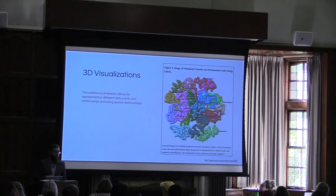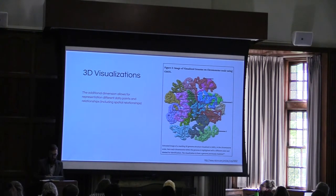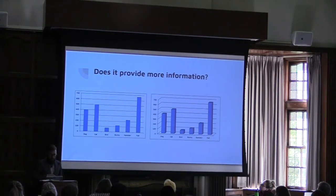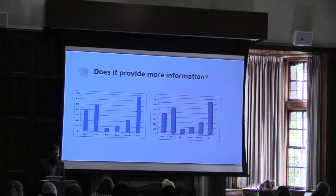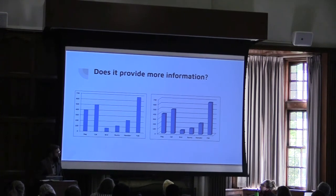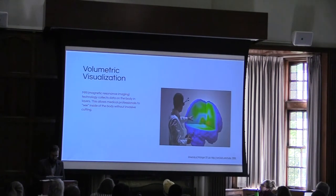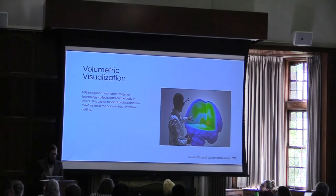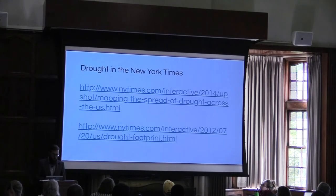3D visualizations can sometimes be helpful because they give you an extra dimension, but they can be difficult to read. Especially if the third dimension doesn't communicate any additional information, it's generally a bad choice. There are also volumetric visualizations which some people in the sciences work with — just to say there are lots of different types of visualizations to choose from.